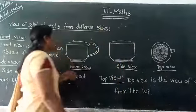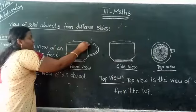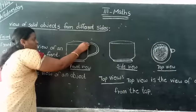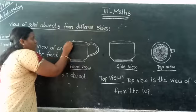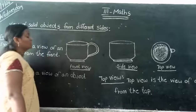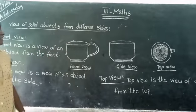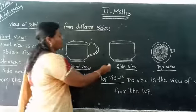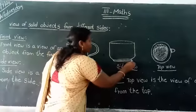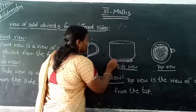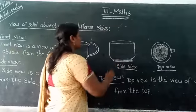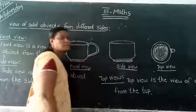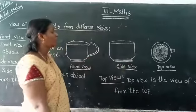See, as students, this is the curve — front view. Front view means the view of an object from the front. This is the front view of the curve. And this is the side view of the curve. Side view means the view of an object from the side.